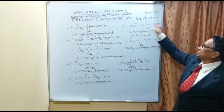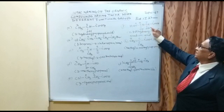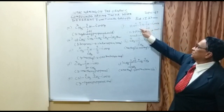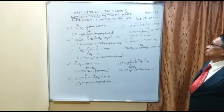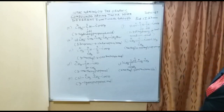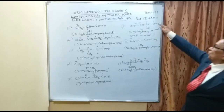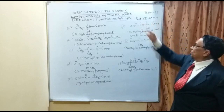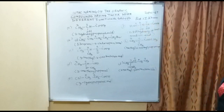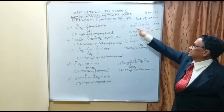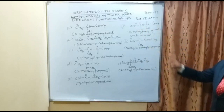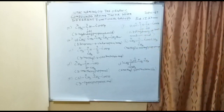Example F has numbering 1 through 4. At carbon 2 and carbon 3 there are two hydroxy groups, and at carbon 1 and carbon 4 there are acid groups, giving the name 2,3-dihydroxybutanedioic acid.